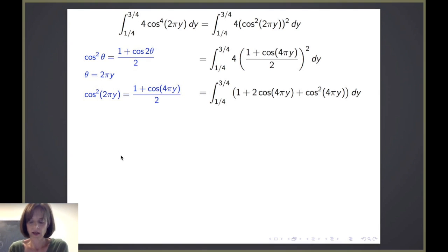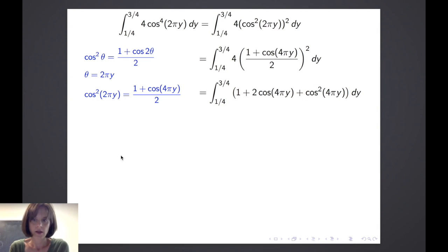We see again that we have an even power of cosine, so we will apply the half angle formula again, but this time letting theta equal 4 times pi times y, so that cosine squared of 4 pi y equals 1 plus cosine of 8 pi y all divided by 2.